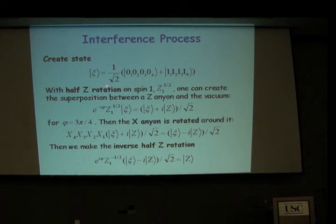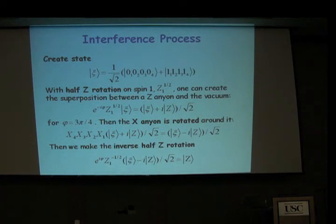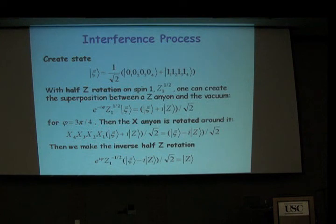This is an overall minus sign and you can't observe it directly, so you have to perform an interference process to bring it out. Consider the ground state: act on it with a square root of Z instead of a full Z rotation, creating a superposition between the ground state and the excited anyonic state. Without the Hamiltonian, it's just a superposition between the vacuum and the populated anyonic state. Then if you apply the string operator or loop operator, the minus sign is created between the superposition terms. As a first step, if you apply the inverse square root of Z rotation, the final state goes to the anyonic state.